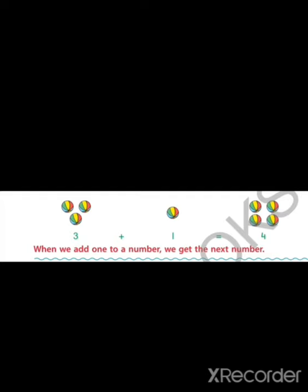Another property of addition is when we add 1 to a number we get the next number. In number 5 when we will add 1 we will get number 6.